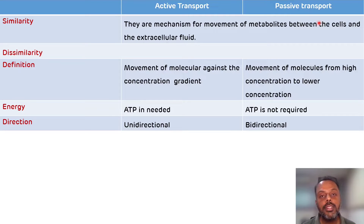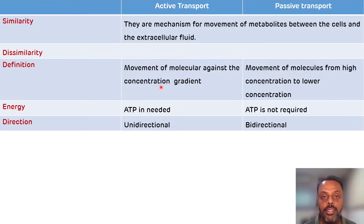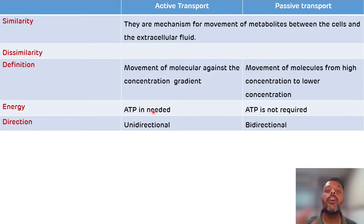Now, what are the differences between active transport and passive transport? The first difference is related to the definition. Active transport is the mechanism required for the movement of metabolites against the concentration gradient, and as it is against the concentration gradient, it will utilize ATP. While in passive transport, it is the mechanism for the movement of metabolites from higher concentration to lower concentration, and it does not require ATP.